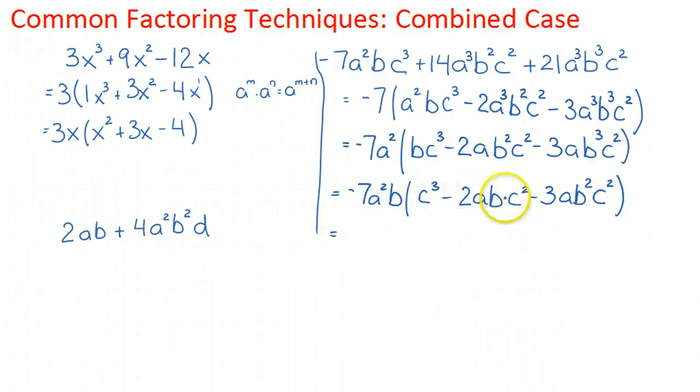And now finally I look and I see c is in each of the terms, so I factor c. I have c³, c², c², so I'm going to factor c². That gives -7a²bc², and that's going to leave me with c minus 2ab. The c² is factored out, minus 3ab², and the c² is factored out.